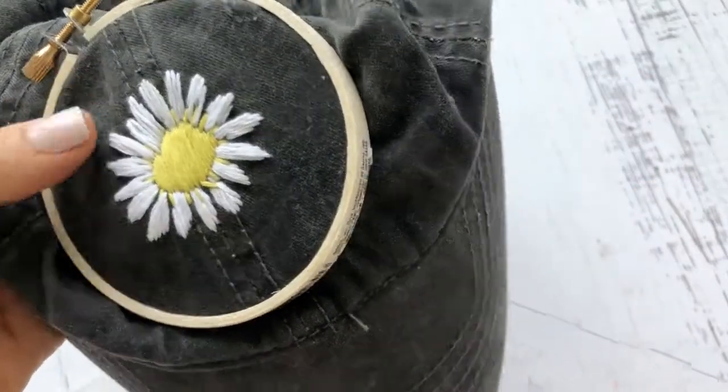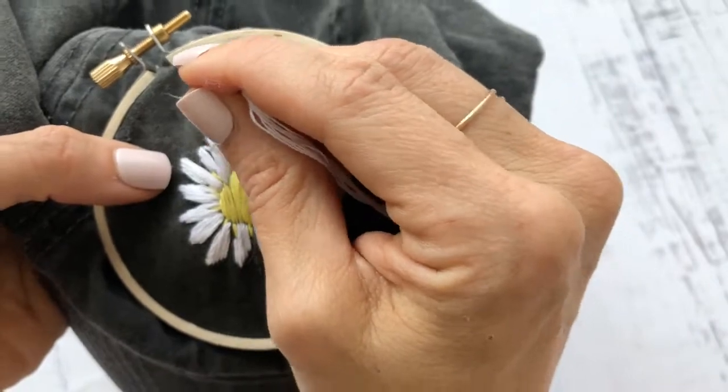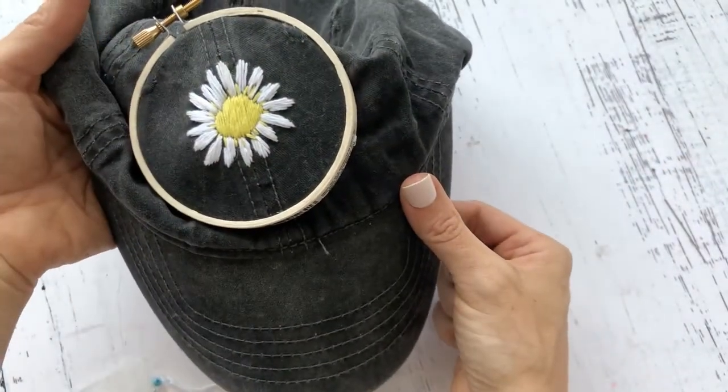You're just gonna tie it off in the back and snip your edges and then remove your embroidery hoop.